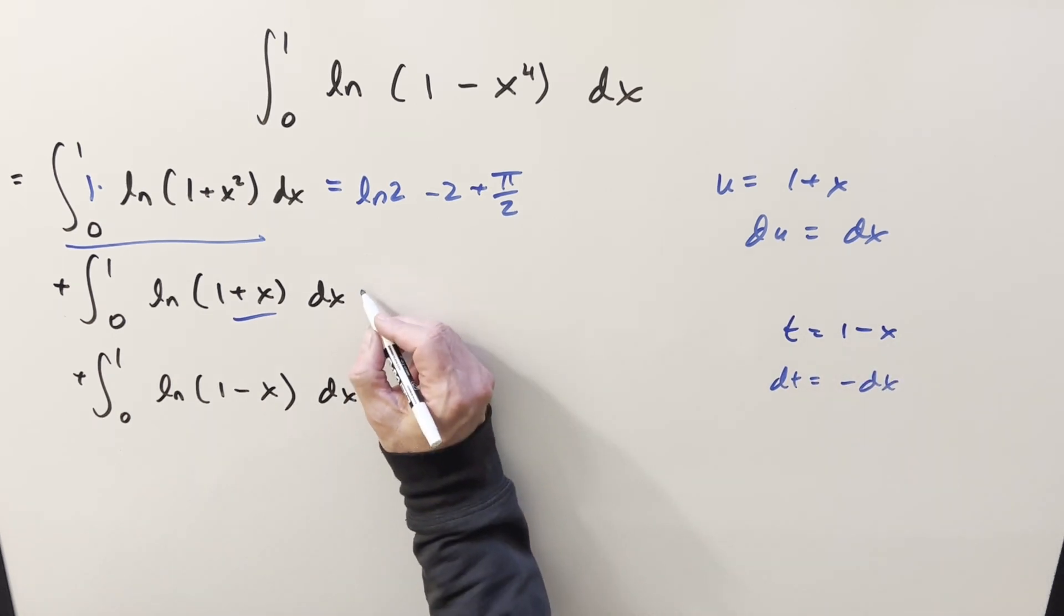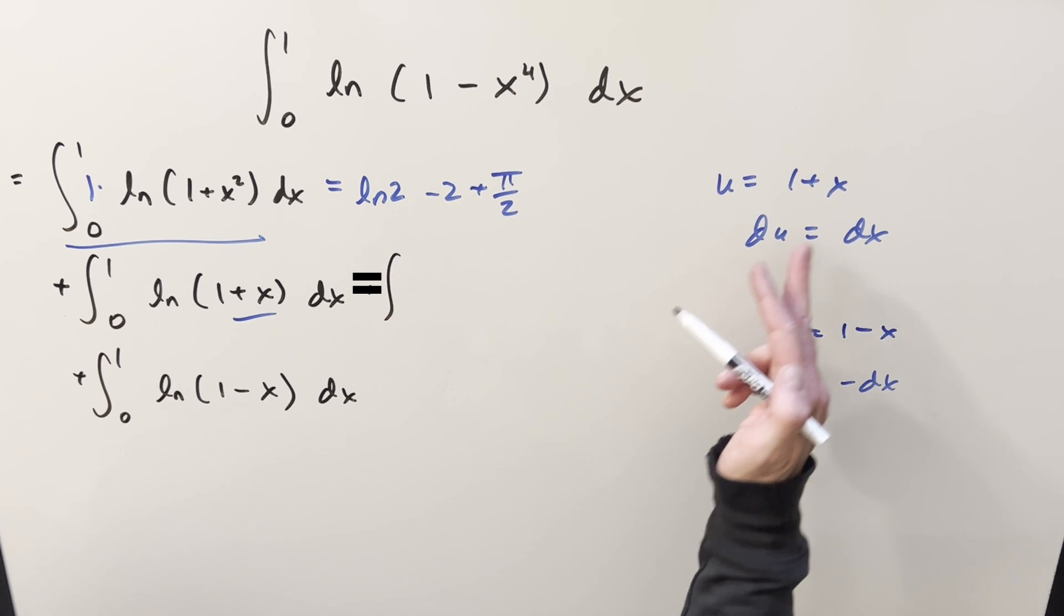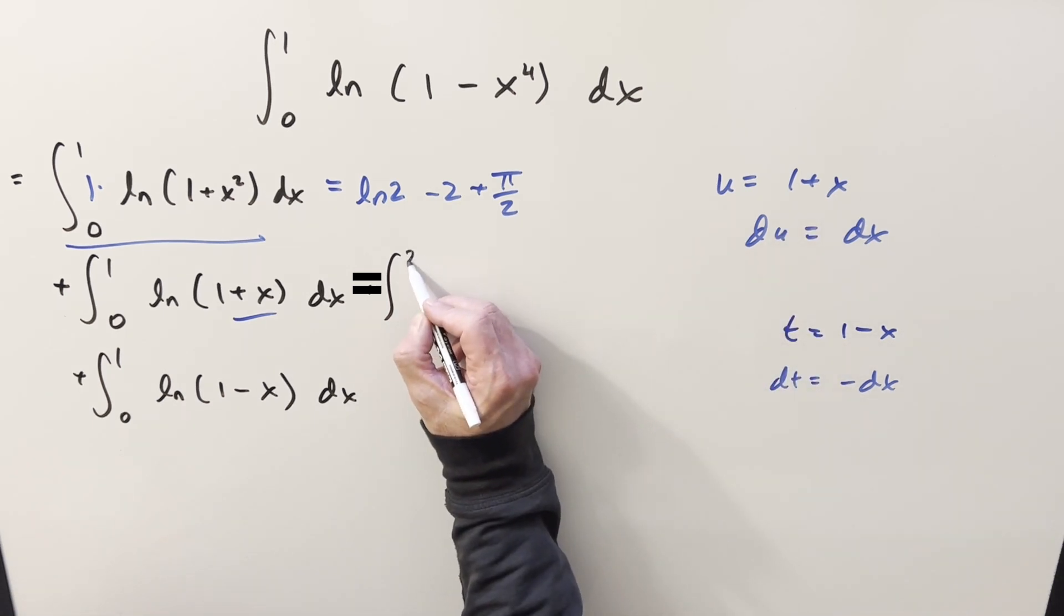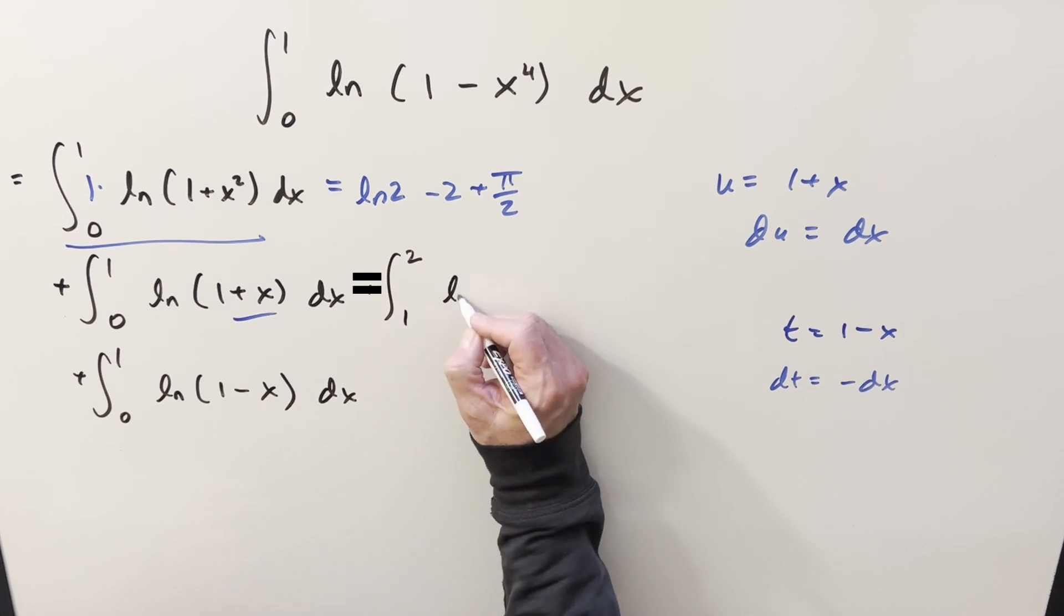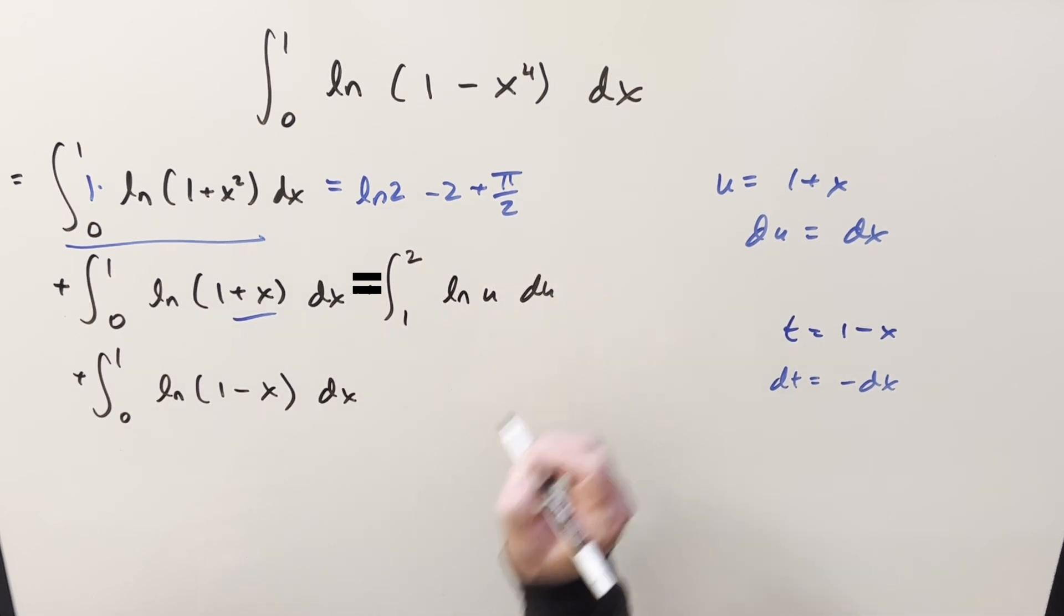We'll go ahead and substitute on this. So first here with the u substitution, adding one to the bounds, adding one to two, we're going two and this lower bound becomes a one. Then we just have natural log u du.